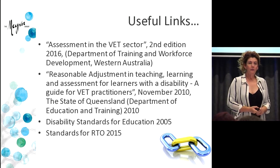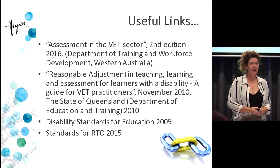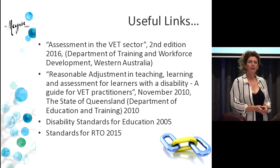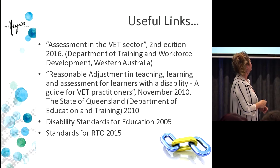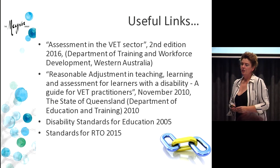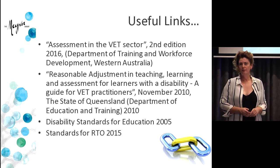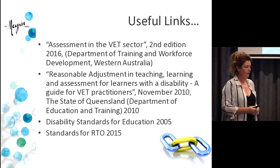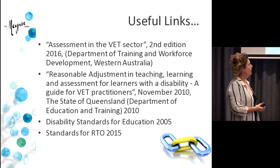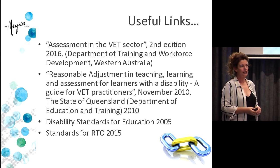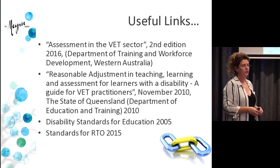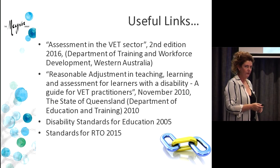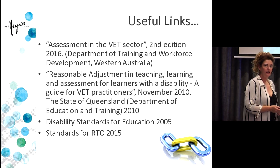The idea of the process checklist is that you can take it away and start thinking about how it might be used in your organisation. There are a number of links that might be useful in terms of finding out more information about reasonable adjustment — you have the department's book, the disability standards themselves, the Queensland publication which has a lot of supporting fact sheets, your RTO standards, and of course you can just Google 'reasonable adjustment' and be amazed at what appears. This PowerPoint will be available to people to access after the session.